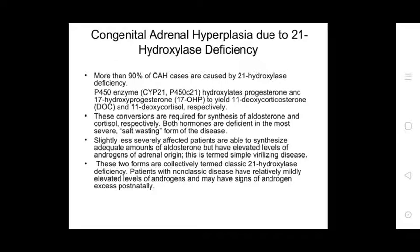Congenital adrenal hyperplasia due to 21-hydroxylase deficiency accounts for more than 90% of CAH cases. The P450-C21 hydroxylase enzyme converts progesterone and 17-OHP to yield 11-deoxycorticosterone (DOC) and 11-deoxycortisol respectively. These conversions are required for synthesis of aldosterone and cortisol respectively. Both hormones are deficient in the most severe salt-wasting form of the disease. Slightly less severe affected patients are able to synthesize adequate amounts of aldosterone but have elevated levels of androgen — termed simple virilizing disease.